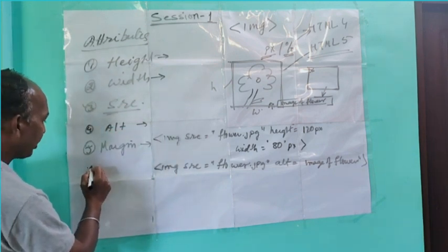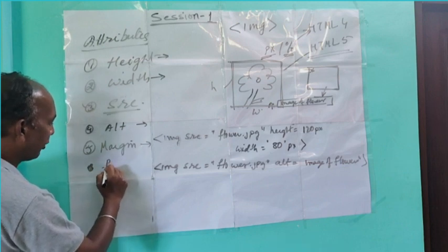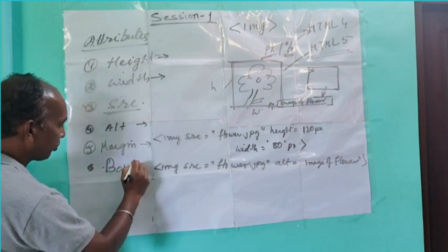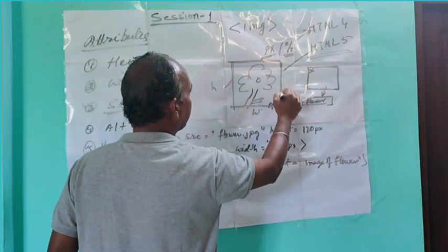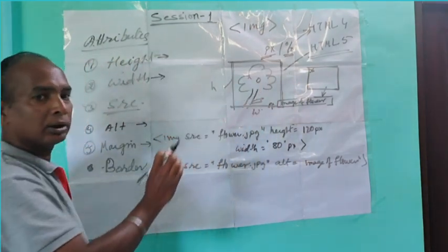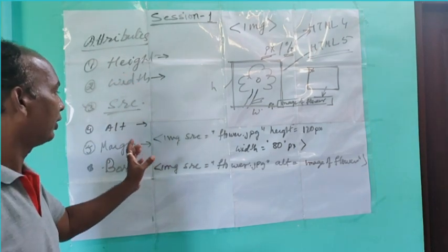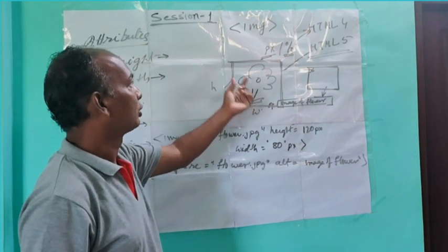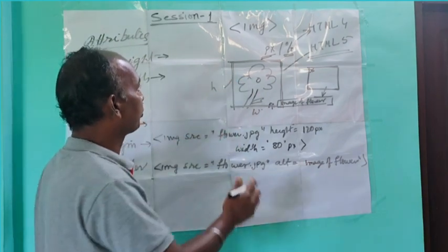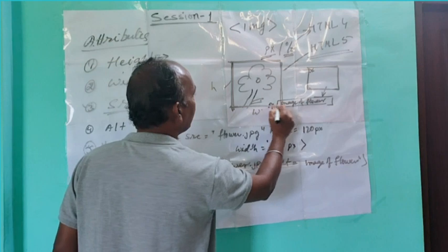After margin, we have the border attribute. The border controls how thick the border around the image is — whether thin or thick. The value of the border depends on the number you give: a lower value gives a thinner border and a higher value gives a thicker border.